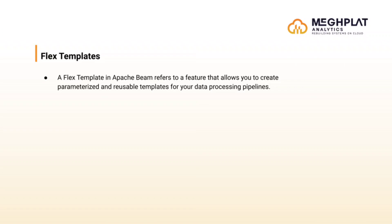Flex templates provide a way to define your Apache Beam pipeline with parameters that can be customized at runtime, making it more adaptable to different use cases without modifying the underlying code. Flex templates are particularly useful when deploying and executing pipelines on cloud-based data processing services like GCP or Google Cloud Dataflow. Now, how can we actually create a flex template? A flex template is a way to package a Beam pipeline as a template that can be executed on a variety of data processing services.